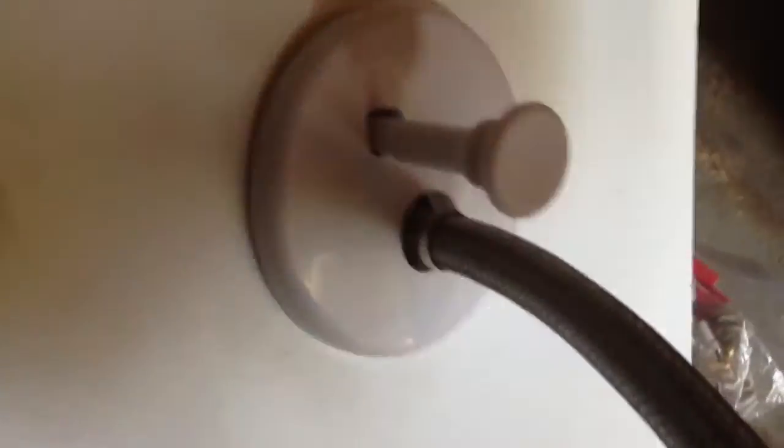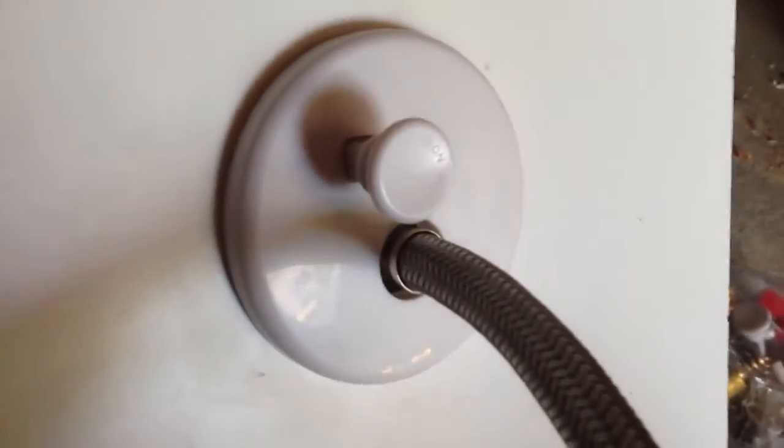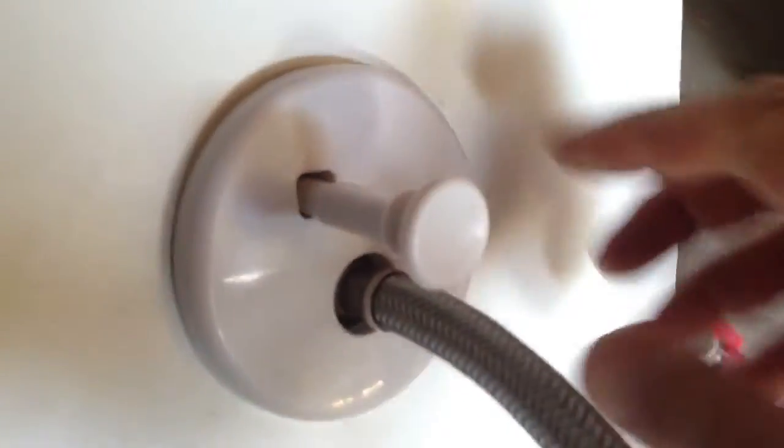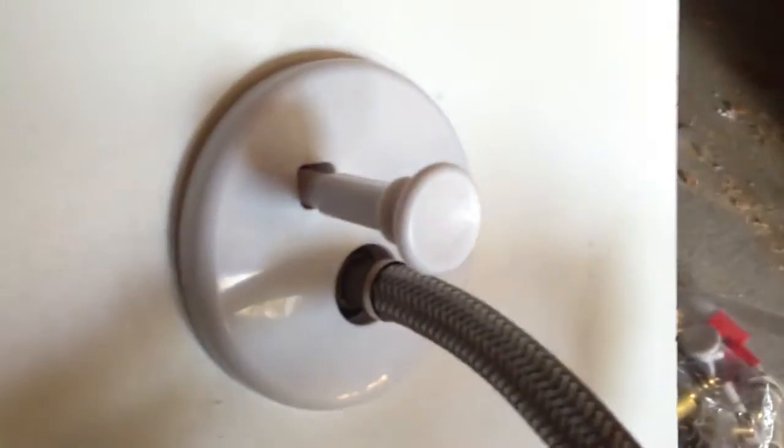When you're ready to turn the water on and your knob is attached, you just push that in and now your water's on. If you need to turn the water off, you just pull this valve handle out and you're off.